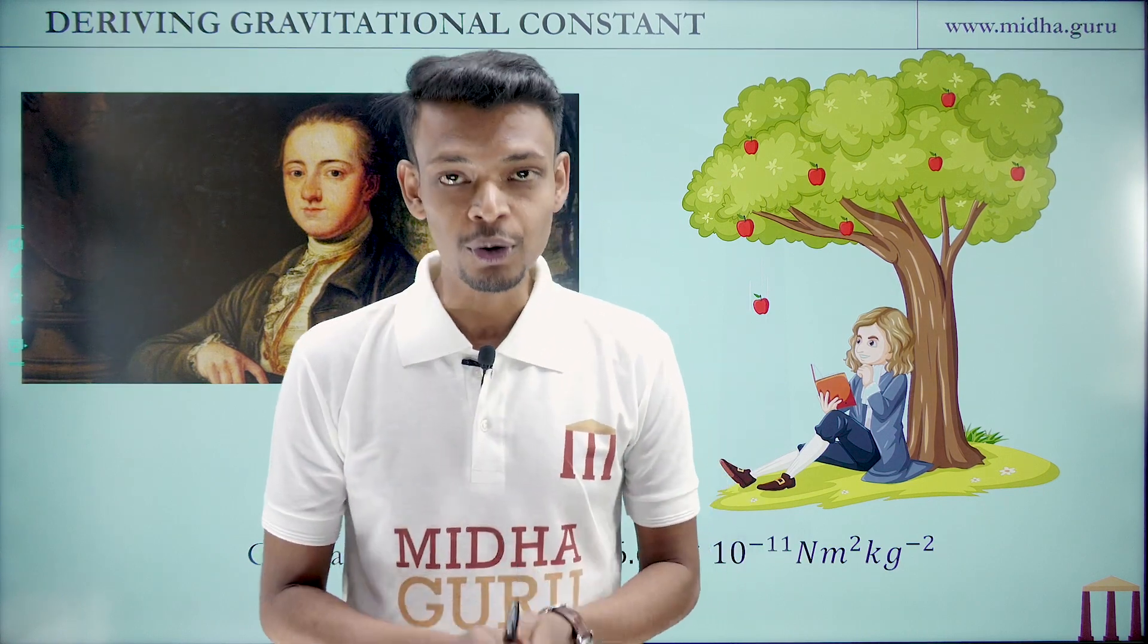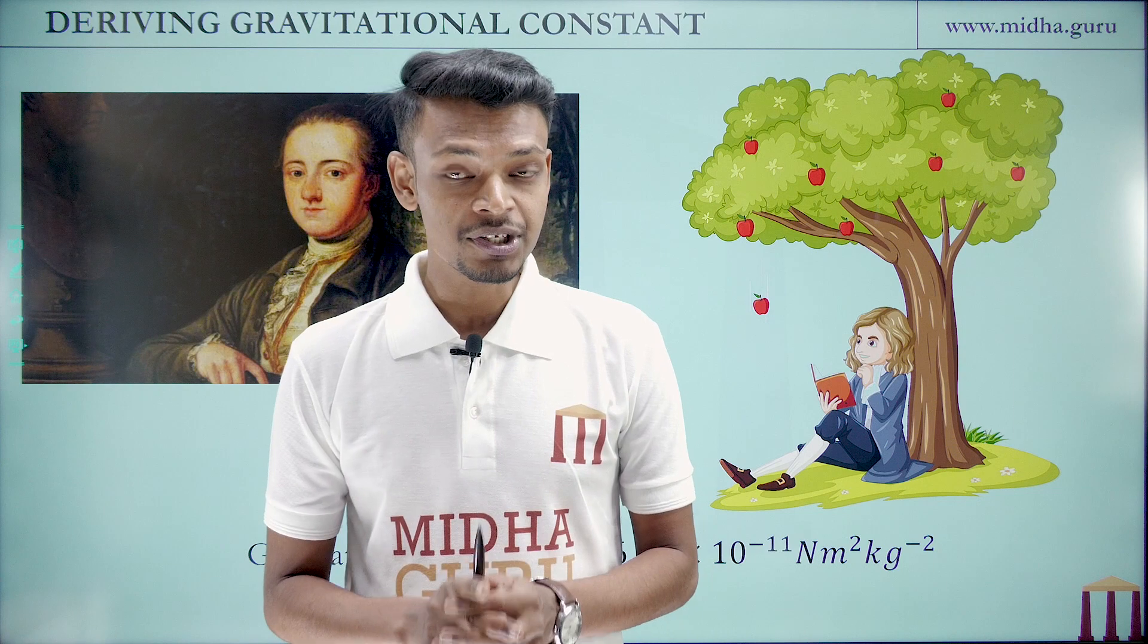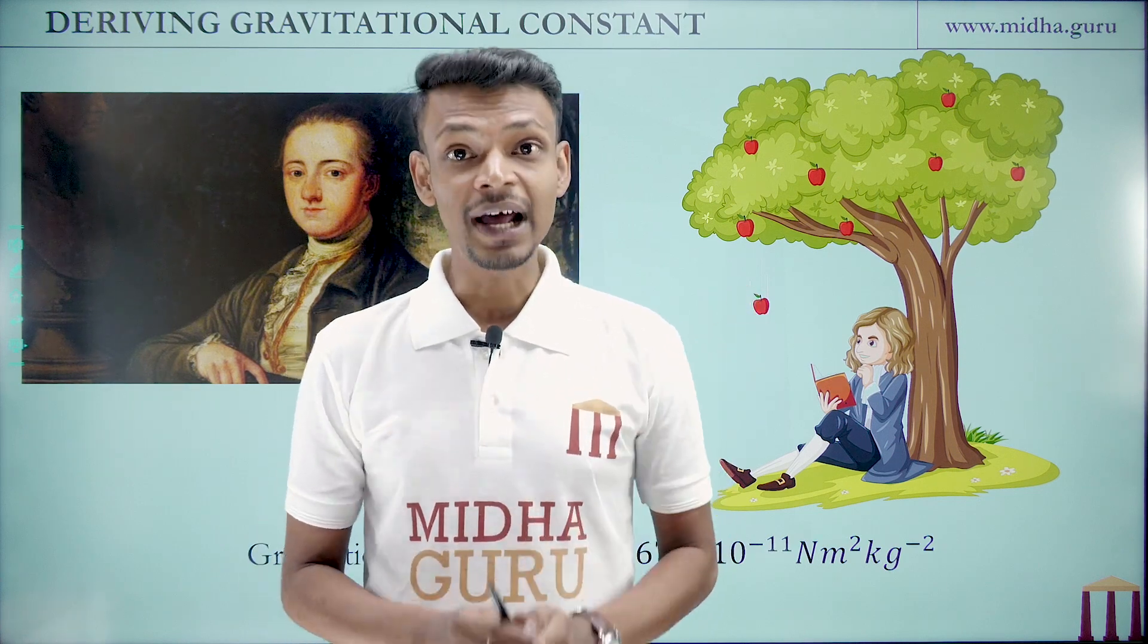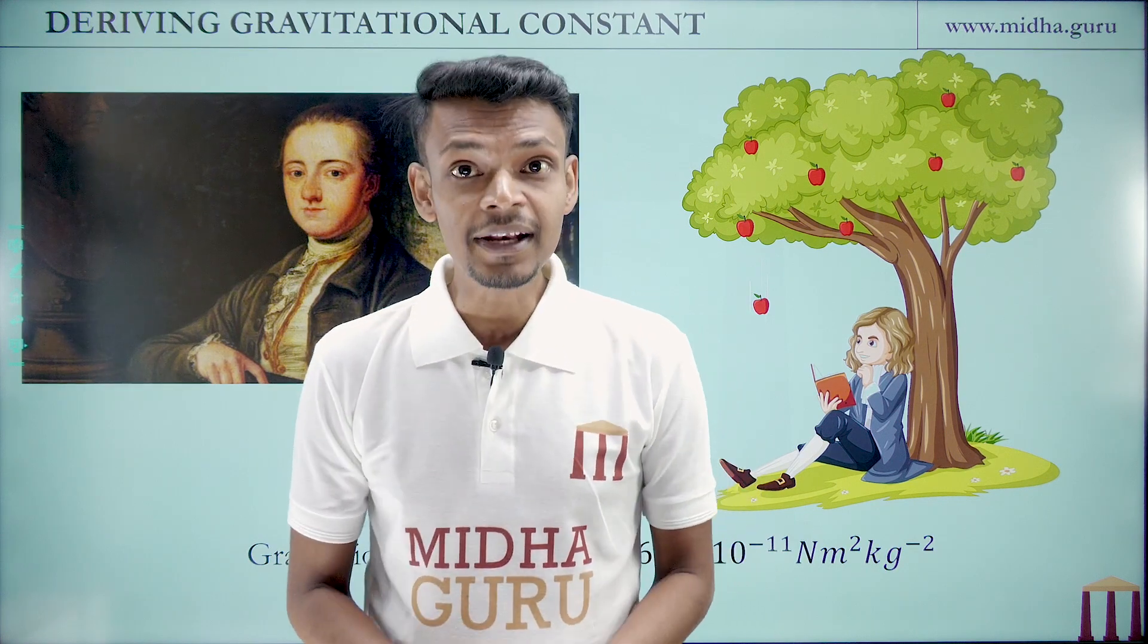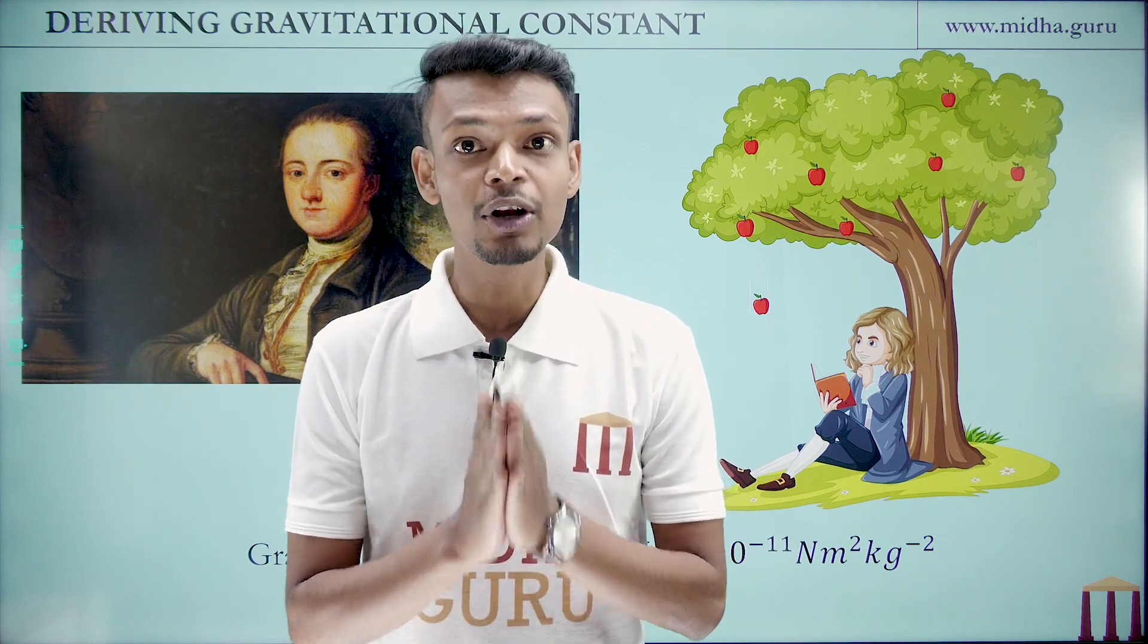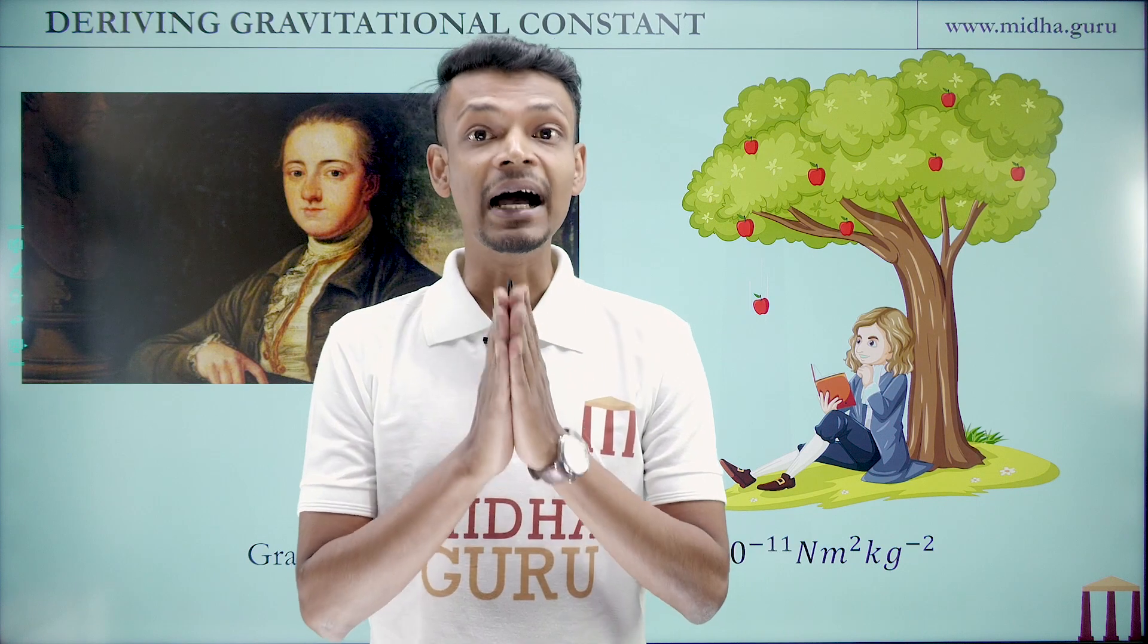But do you know that the value of gravitational constant was not given by Isaac Newton? Rather, it was given by Sir Henry Cavendish 110 years after the gravitational law was put forth by Isaac Newton.